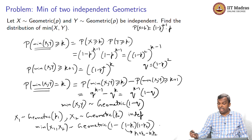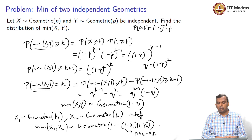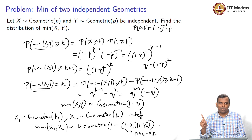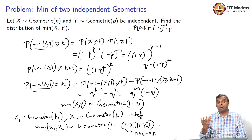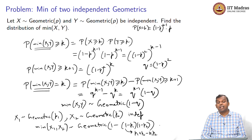This is a very nice result: the minimum of two independent geometric distributions is again a geometric distribution. You can try the same calculation for the maximum of two geometric distributions — that is not geometric. The maximum of two independent geometric distributions is not geometric, but the minimum is. That concludes the lecture and the lectures for this week. Thank you very much; we will see you next week.